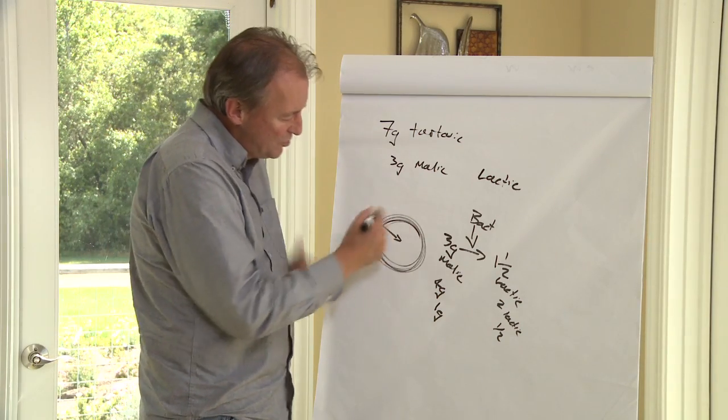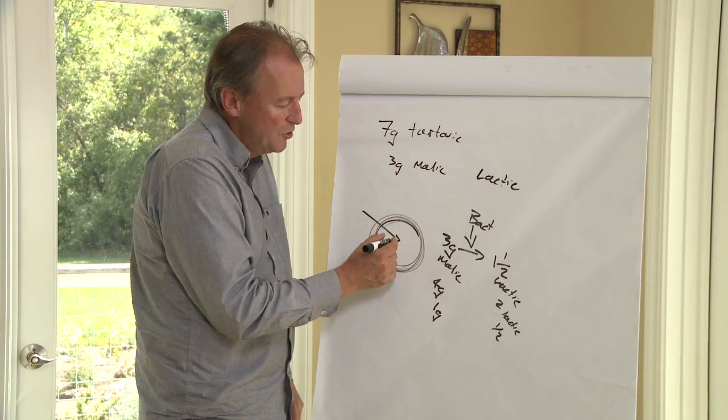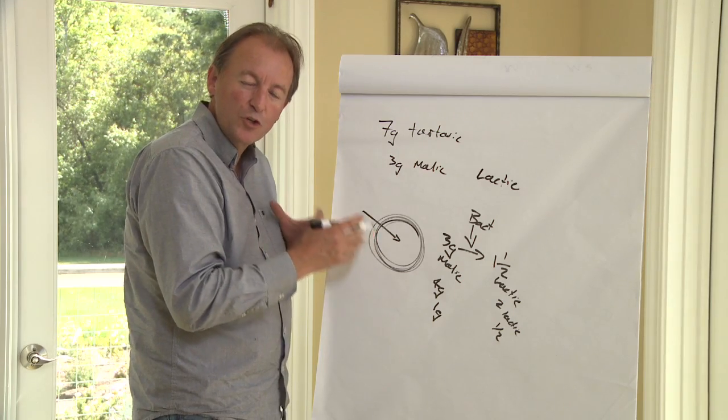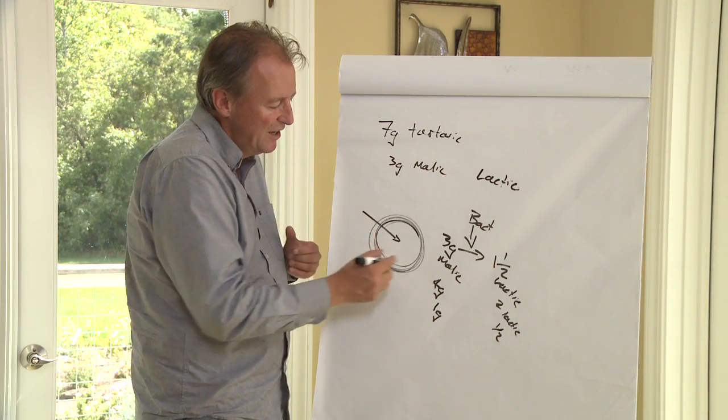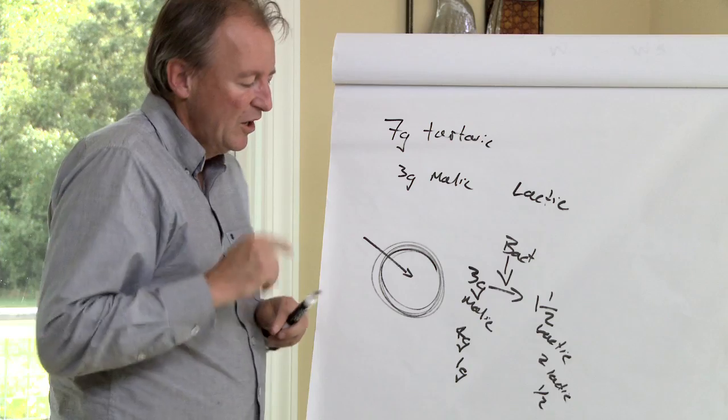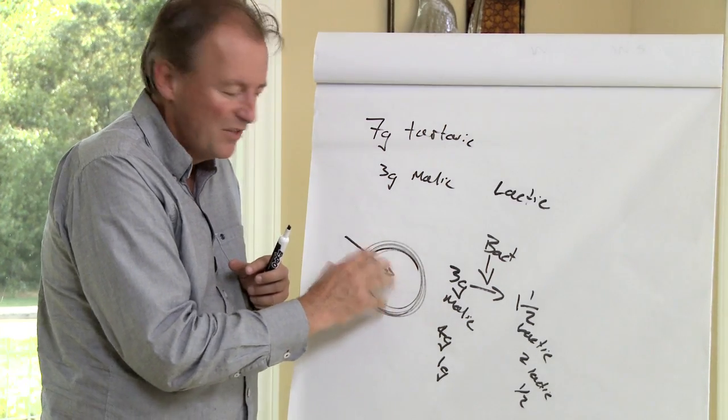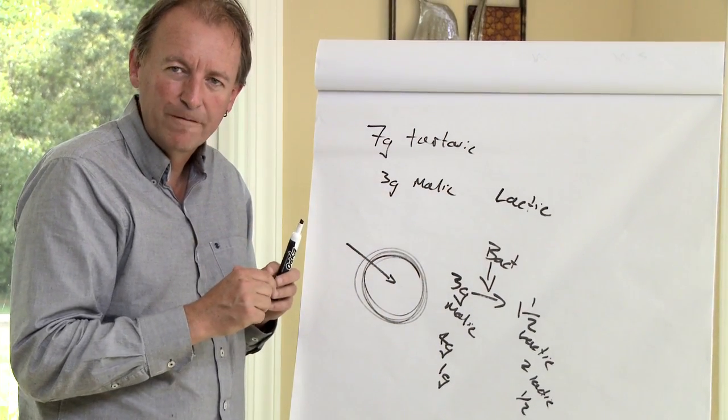The second thing is, if this fermentation is going along quite happily and you introduce the malolactic fermentation during the primary fermentation, yeast are using nitrogen to stay healthy and active. If we introduce the malolactic fermentation during the primary fermentation, the yeast will change what they feed on.